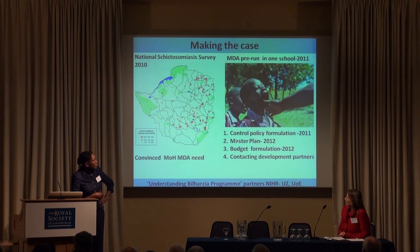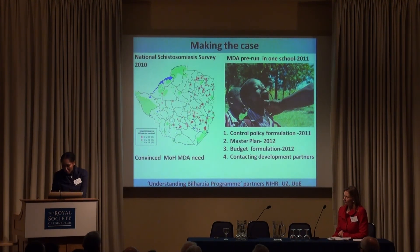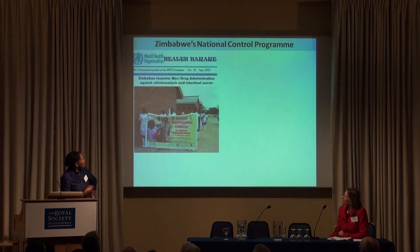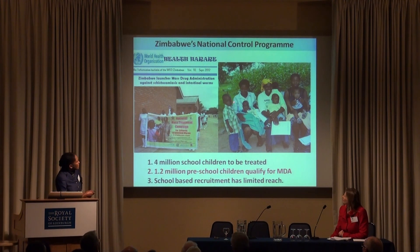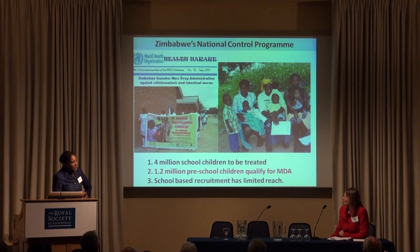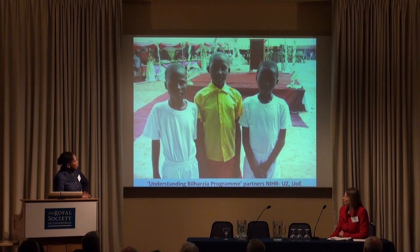We formulated a control policy in 2011. My role was to oversee monitoring and evaluation and ensure research was enshrined in the policy. We then worked on a master plan, formulated the budget, and contacted development partners — including the Schistosomiasis Control Initiative, which has been very supportive of our work in Zimbabwe. I'm happy to report that two weeks ago, Zimbabwe launched a mass drug administration program with great fanfare and celebration, attended by almost every politician in Zimbabwe — though not a single scientist was present. This means 1.2 million preschool children now qualify for mass drug administration in addition to the 4 million school children in Zimbabwe.